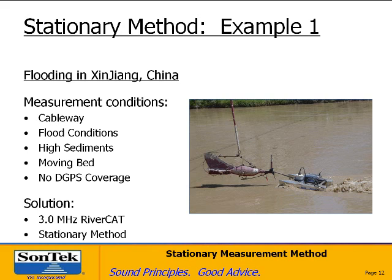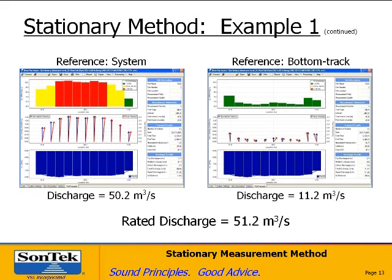We're going to start with a flood example in China. The measurements were performed from a cableway during a flood condition with extremely high sediments and a very significant moving bed. It was in an interior part of China where there was absolutely no chance of DGPS. The solution was a three megahertz River Surveyor using the stationary method. This is a screenshot from a full transect. The upper plot shows percent discharge with each panel. Typically you try to keep 5% or less in each panel — red indicates more than 10%, yellow 5-10%, and green less than 5%.